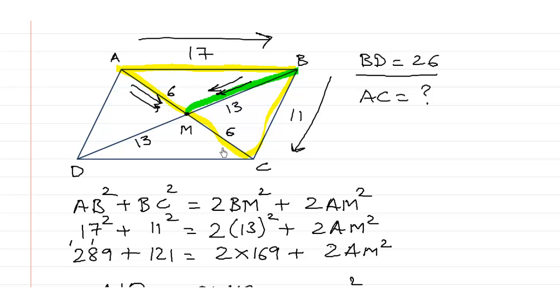So the length of this diagonal AC would be equal to 2 times the length of AM, which is 2 into 6, which is equal to 12. So you saw that we use the Apollonius theorem, the formula for the Apollonius property. And we could solve for the diagonal of the parallelogram. Solve the sums to get more confidence. Thank you.